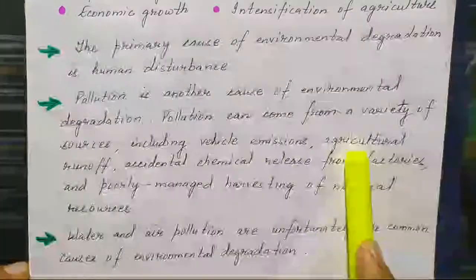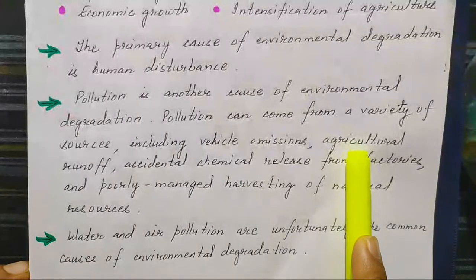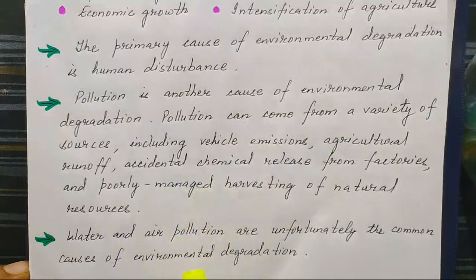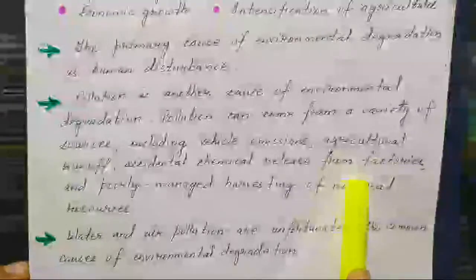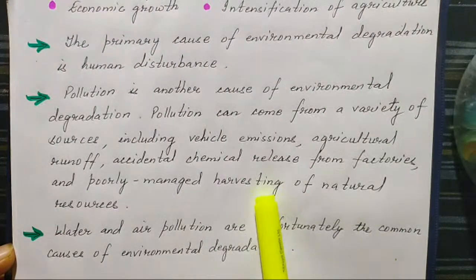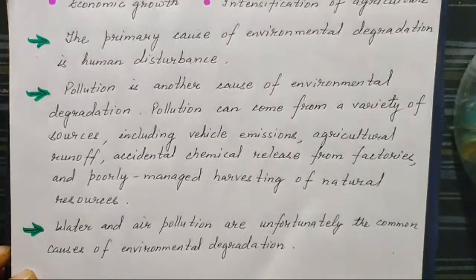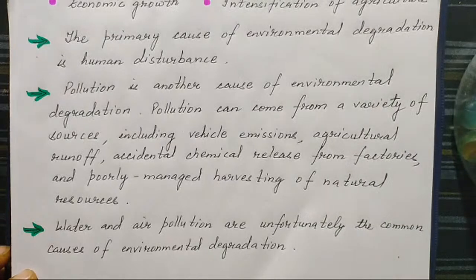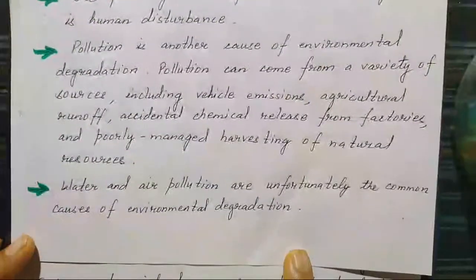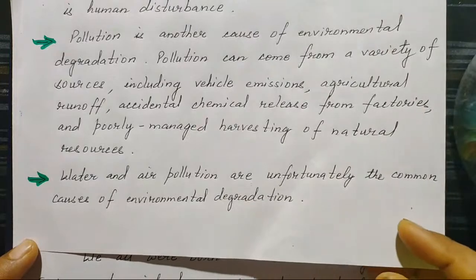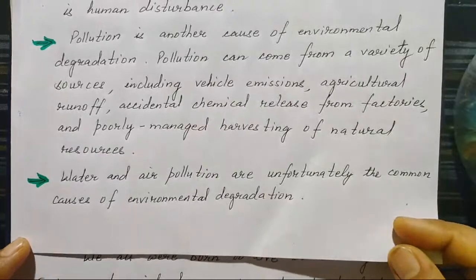Agricultural runoff: we use chemical fertilizers in agriculture, and when it rains or water flows, all those chemicals reach nearby water bodies causing water pollution. Accidental chemical release from industrial works and poorly managed harvesting of natural resources also contribute. Natural resources must be used judiciously, without destroying them. Water and air pollution are unfortunately the common causes of environmental degradation.